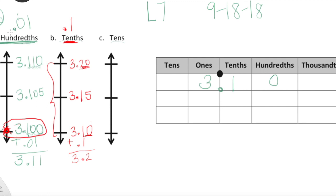Next we need to place 3.10 on our vertical number line. 3.10 falls right at the low point, so we don't travel anywhere along the number line. The low side of our vertical number line is the same as our number, so we round to 3.1 — that is 3.1 rounded to the nearest tenth.